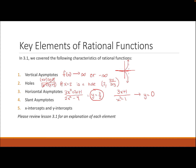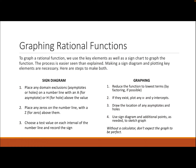A slant asymptote occurs when the degree of the numerator is exactly 1 larger than the degree of the denominator. For example, if we change the rational function to 3x³ + 1 divided by x² - 1, it has a slant asymptote because 3 is 1 greater than 2. The x-intercepts come from setting the numerator equal to 0, and y-intercepts from substituting x = 0 into the rational function.